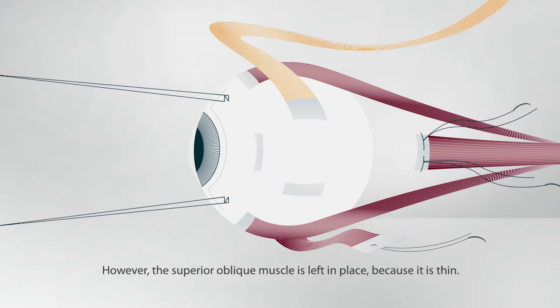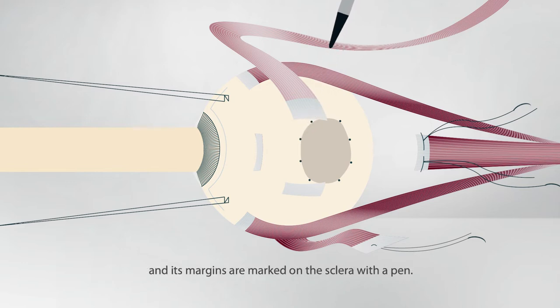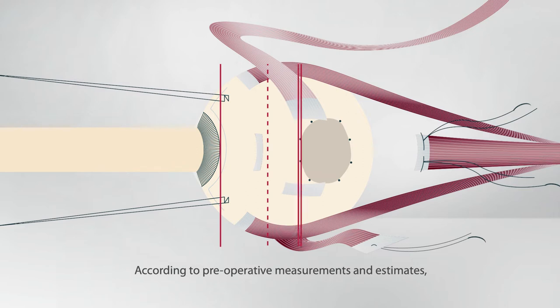The tumor is localized by transpupillary or transocular transillumination and its margins are marked on the sclera with a pen. According to preoperative measurements and estimates, an ink mark is also made on the sclera at the intended location of the anterior plaque edge.